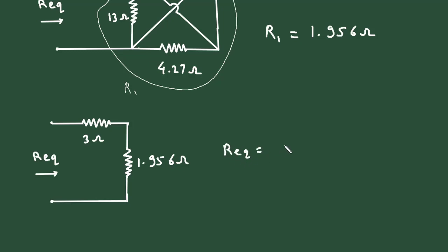So, Req equals 3 plus 1.956. Therefore, Req equals 4.956 ohm.